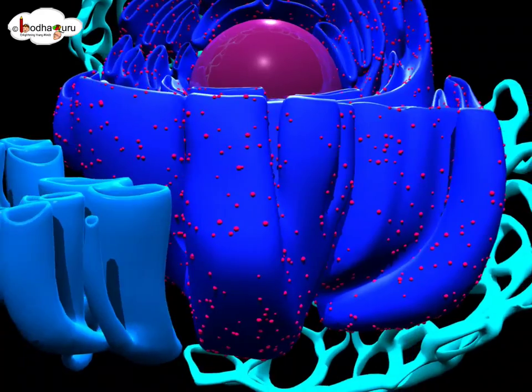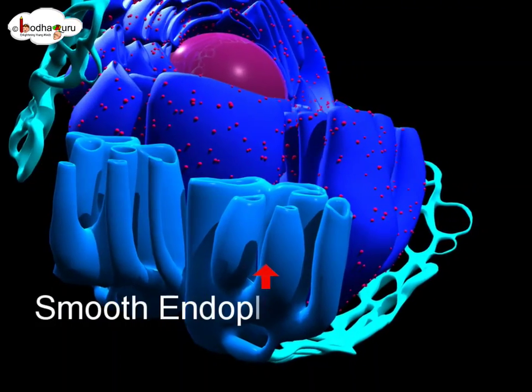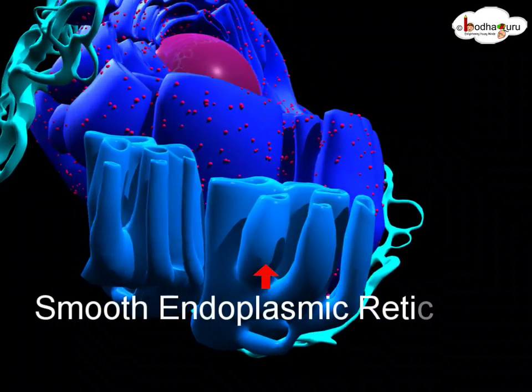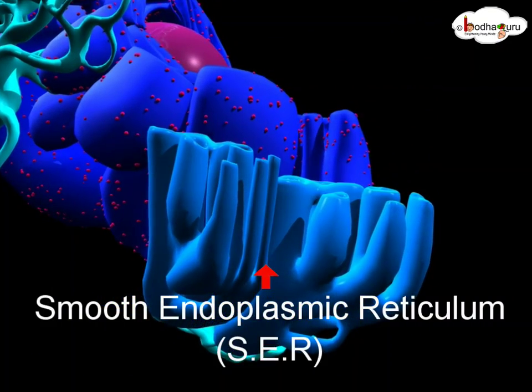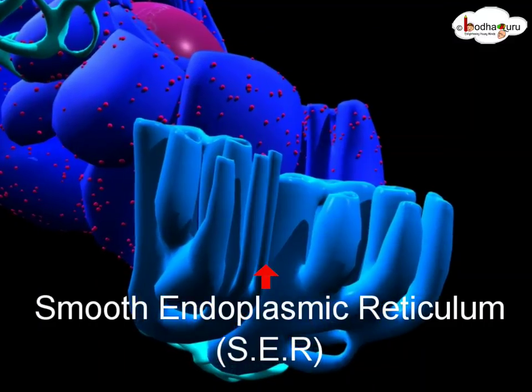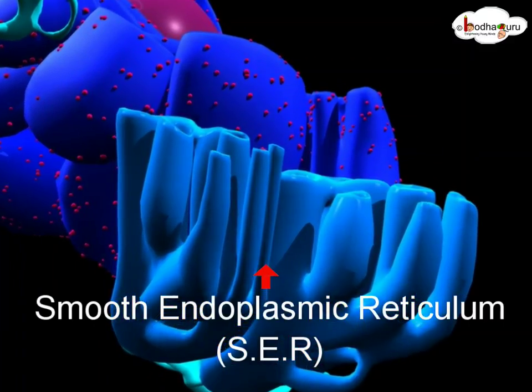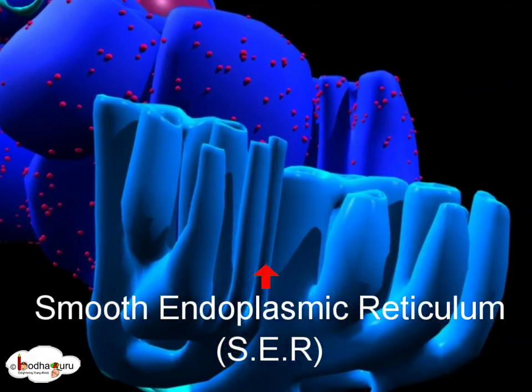The smooth endoplasmic reticulum, in short SER, lacks ribosomes and functions in lipid manufacture and metabolism.